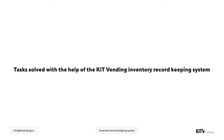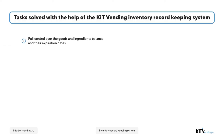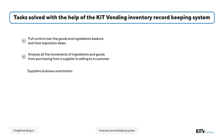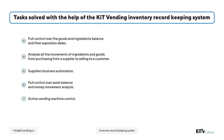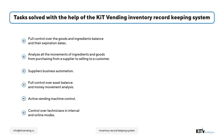The record-keeping system allows the vending operator to solve the following tasks: full control over the goods and ingredients balance and their expiration dates, goods movement analysis from purchasing from a supplier to selling to a customer, supplier business automation, full control over the asset balance and money movement analysis, active vending machine control, and control over technicians in both interval and live modes.